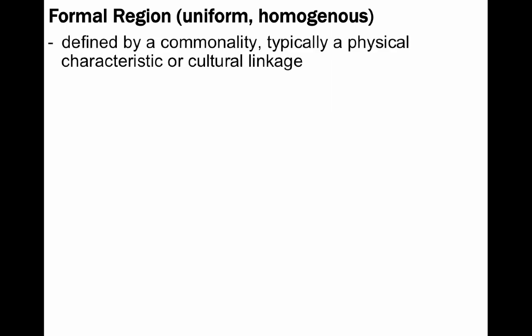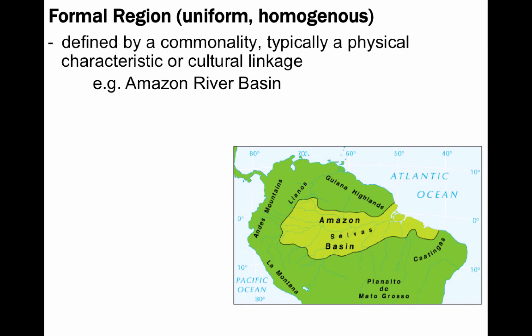Now we shift our attention to the theme of region, and there are three types of regions we are interested in. The first one being a formal region, also known as a uniform or homogenous region. Formal regions are based on data, meaning they are predicated on facts, or at least the best information we have. Often, formal regions can be categorized using physical characteristics such as landforms, like the Amazon River Basin, as well as other traits such as climate, vegetation, or other environmental features.